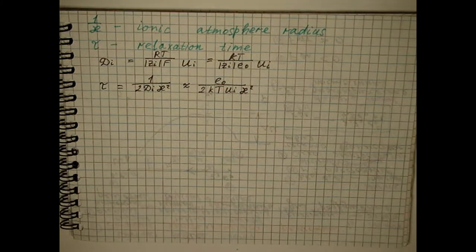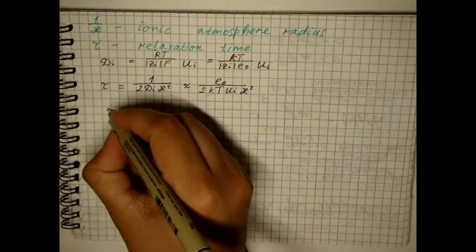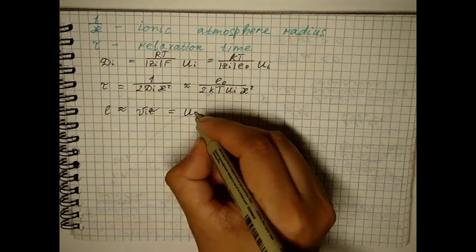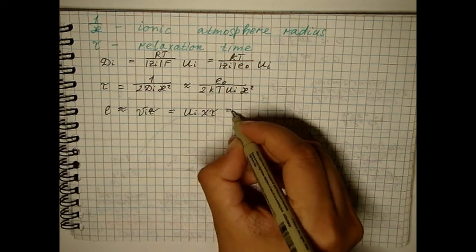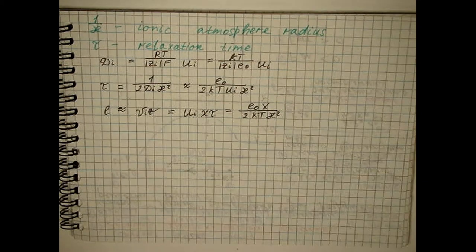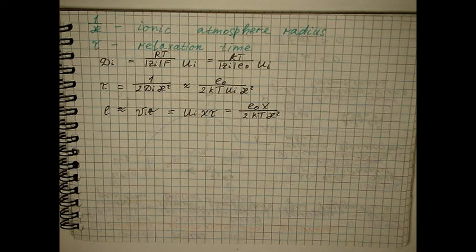The central ion has time to move during the relaxation time. The distance the ion moves characterizes the asymmetry of the non-equilibrium ionic atmosphere.